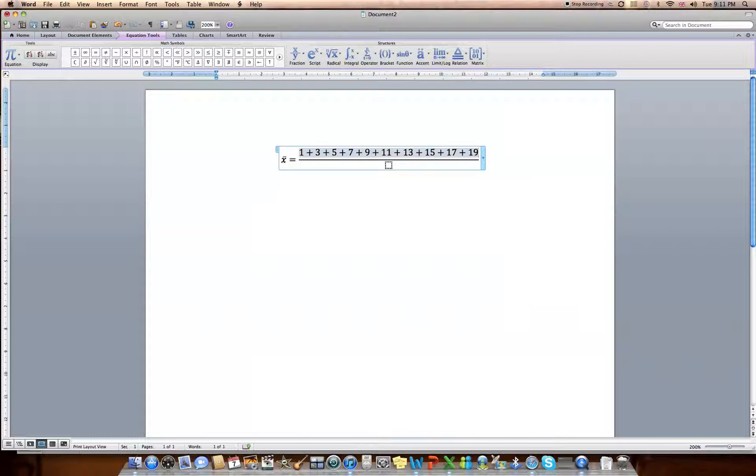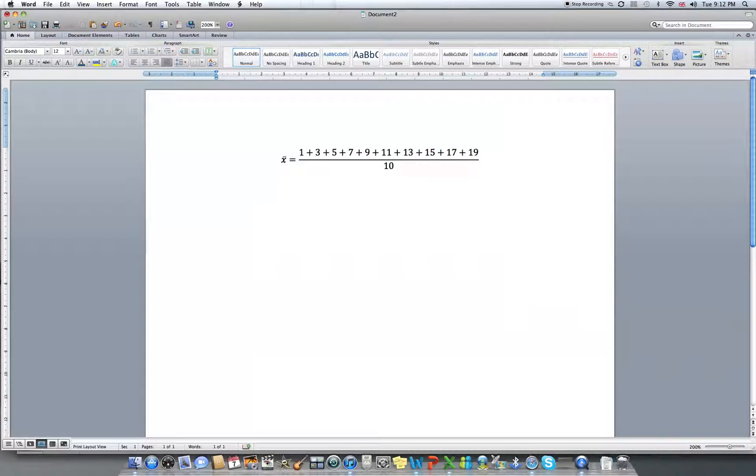If I count the numbers, 1, 2, 3, 4, 5, 6, 7, 8, 9, 10, there are 10 numbers. So I want to divide by 10. Now of course, because I'm in Microsoft Word, this is not going to actually calculate the mean for me. To do that, I would probably need a calculator. But at least it sort of shows up very nicely. It's great notation. And this is an image file that we can copy into any other document or file.